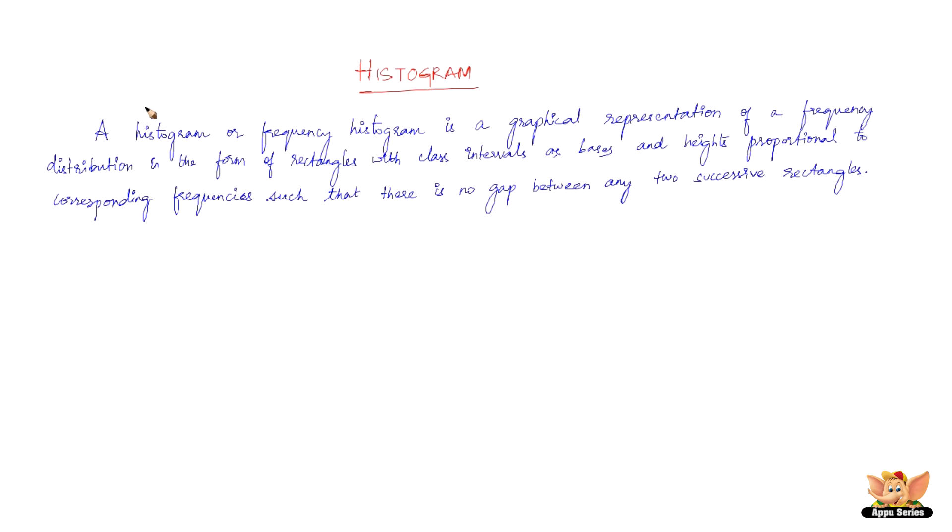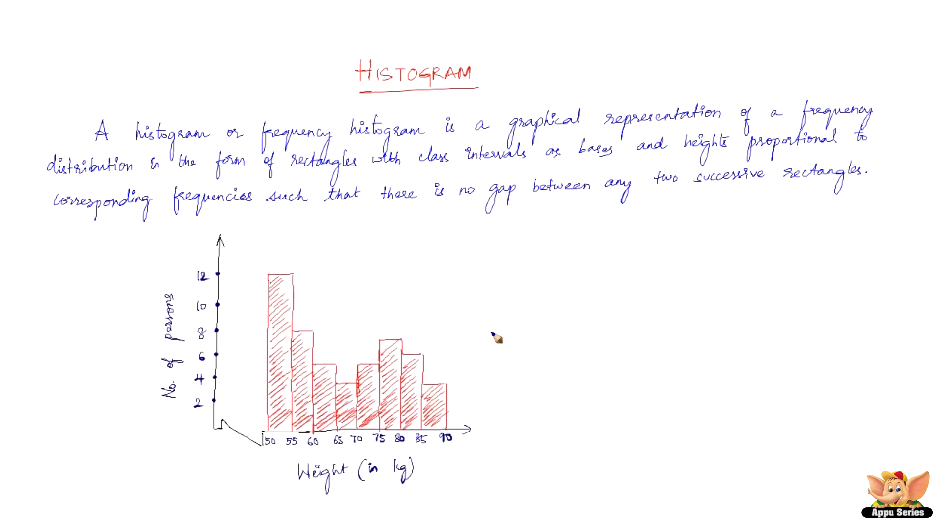I will also try to explain the same definition with the help of an example. So consider the following example. So this is a typical histogram. Now don't worry about this one. This one is just an indication that 1 to 50 lies between this because there is no histogram needed to be drawn here. So we straight away start off from 50. So that is why we use this.